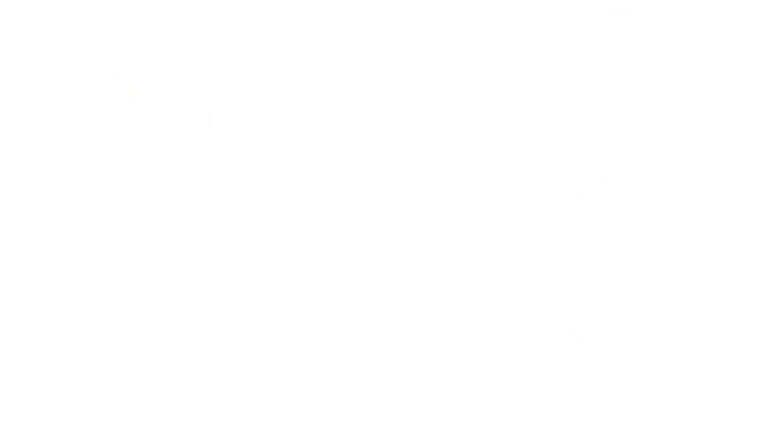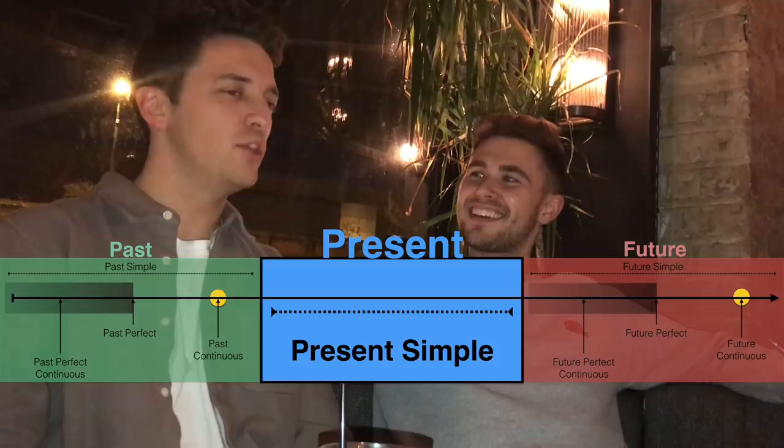So there you go — all the tenses of the English language in one 10-minute video. Before you go, in the comments section, try to create your own story with the timeline of tenses that we've done in this video — go from the past to the future with all of them if you can, and try to get creative. If you like this video and you want to see more like it, do give it a big thumbs up. Thank you very much for watching, and we'll see you soon. Ta-ra for now — see you in the future!